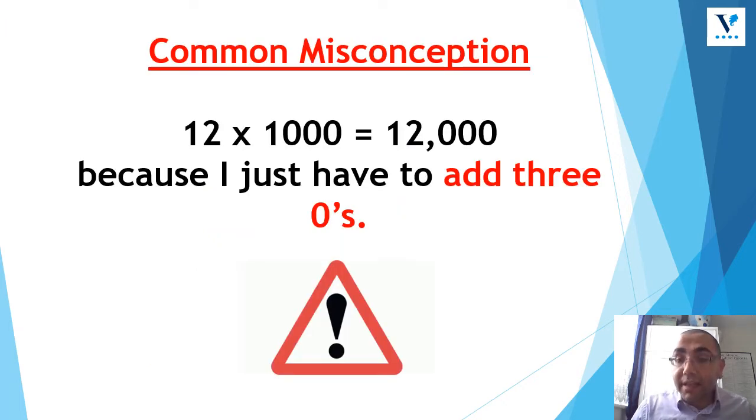In addition to this, another common misconception that I've come across when I've taught this to children across the years, is that they think that if I was to do 12 times 1,000, the answer is 12,000, because I've just got to add three zeros. They look at the number of zeros that they're multiplying by, and they just add that onto the number. That is incorrect. You do not do that. And I'm going to show you why you don't do that in a moment. You've got to move the digits in your place value grid.